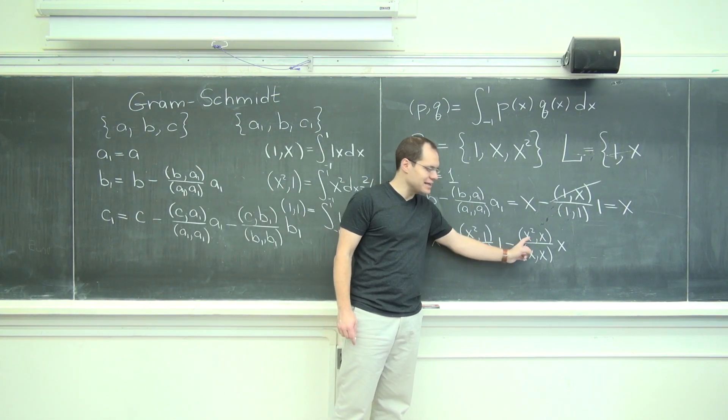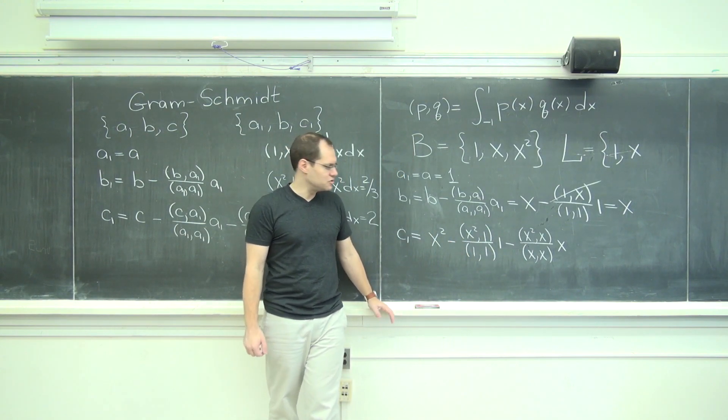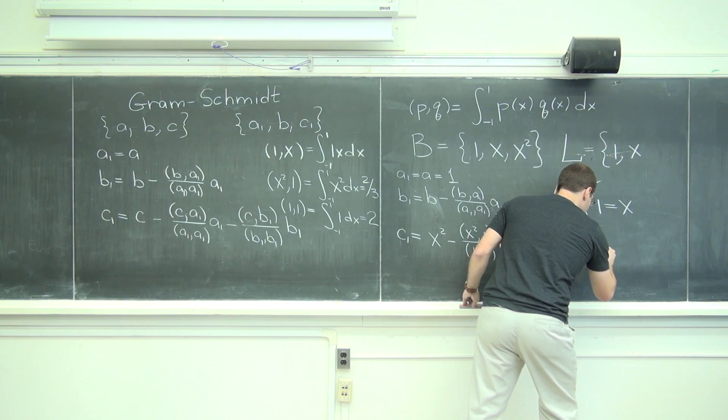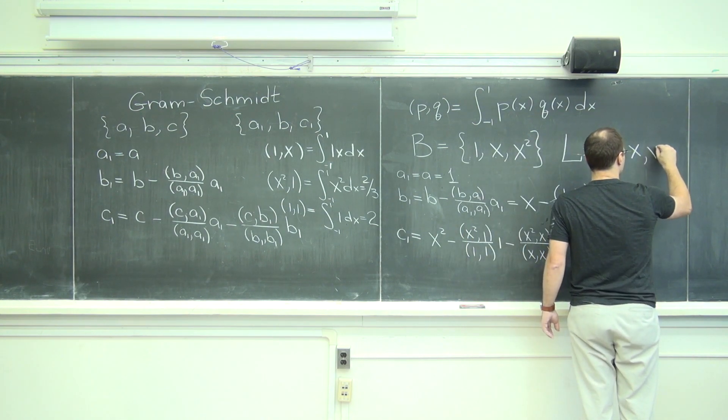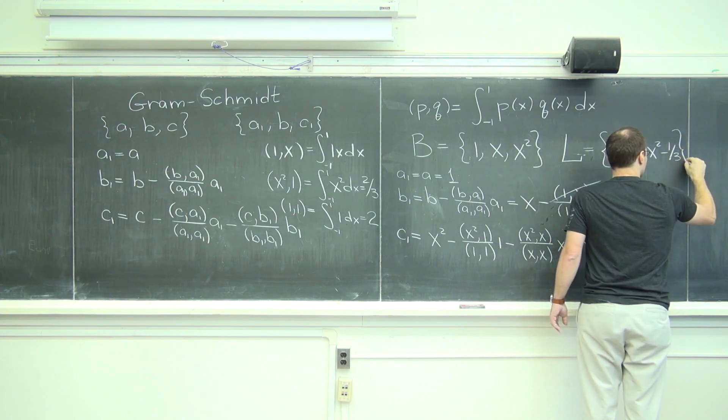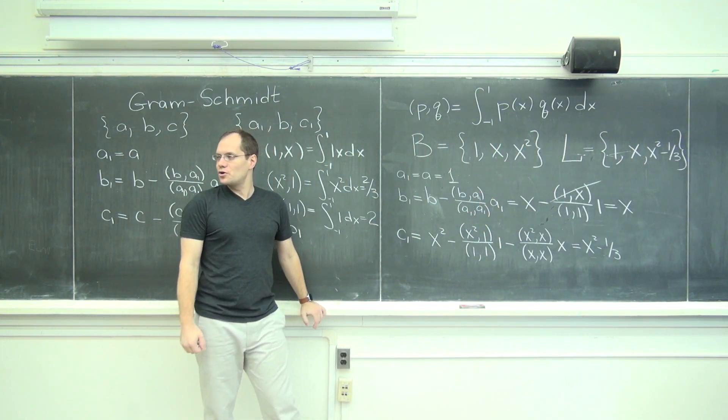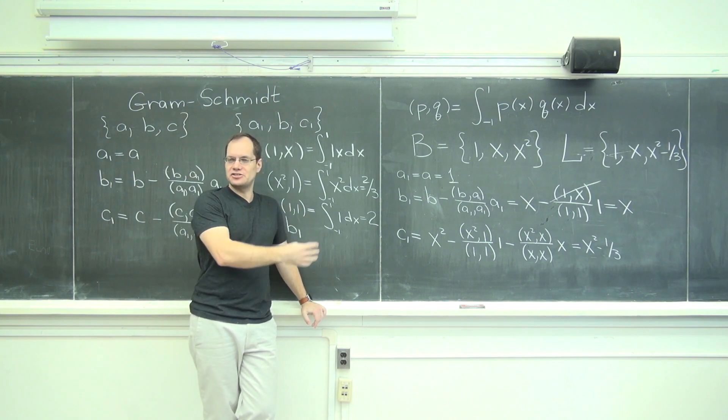So it's x squared minus 1 third. And then? 0. I know this is 0 because this will end up being an odd function integrated over symmetric interval. So it's just x squared minus 1 third. x squared minus 1 third. And then we could do the same thing for cubic, fourth order, and so forth. So this completes the exercise.